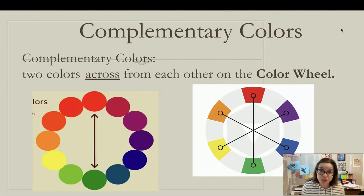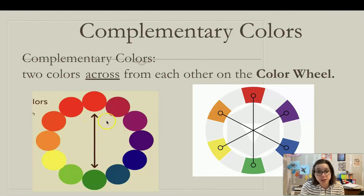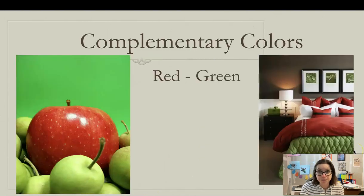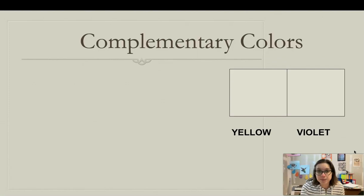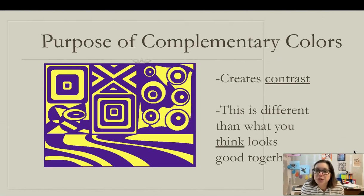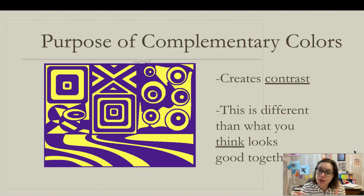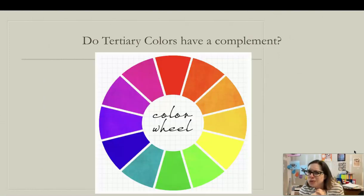One color scheme is called complementary colors — two colors directly across from each other on the color wheel. We've got red and green, yellow and violet, and blue and orange. Red and green is like Christmas colors, but that's just what we associate with that pairing. The purpose of complementary colors is to create contrast. For example, yellow and violet are complementary: when you put them next to each other, they seem to almost vibrate because they appear very bright beside each other.